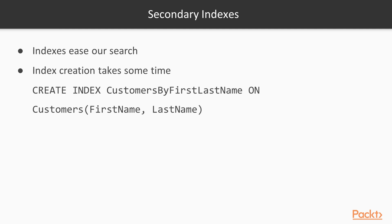To create an index, you simply name the index and specify the table and columns you are creating an index on. For example, we are creating an index on first and last name of our customers table using the CREATE INDEX statement to define a secondary index in the schema. Adding a secondary index to an existing table requires a schema update. Cloud Spanner populates the index with data under the hood, also known as backfilling. The process of backfilling might take some time, but it saves you from having to take the database offline or locking columns from writes and updates.